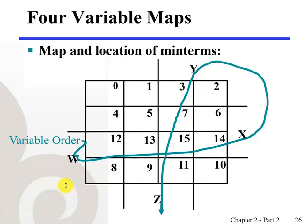And the order of variables will have the following pattern. It's very easy, convenient if you remember this pattern: W, X, and Y, Z. This pattern will make it easier for us to label these four variable K-maps.